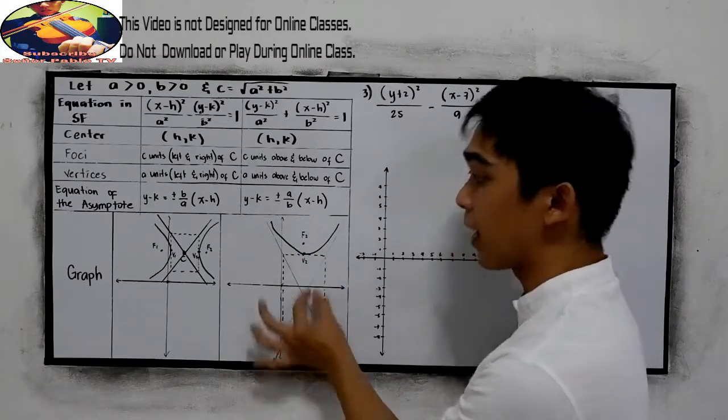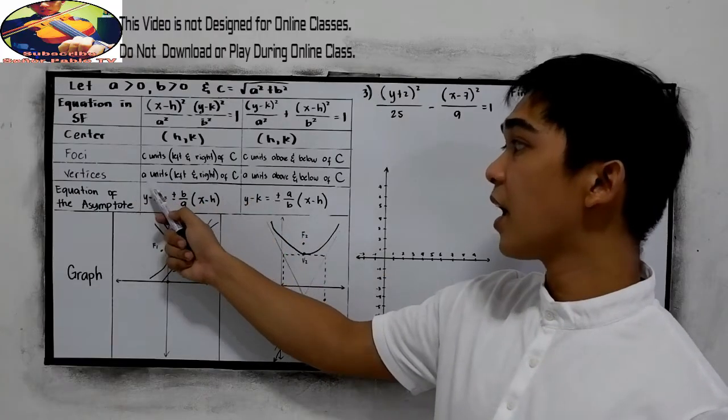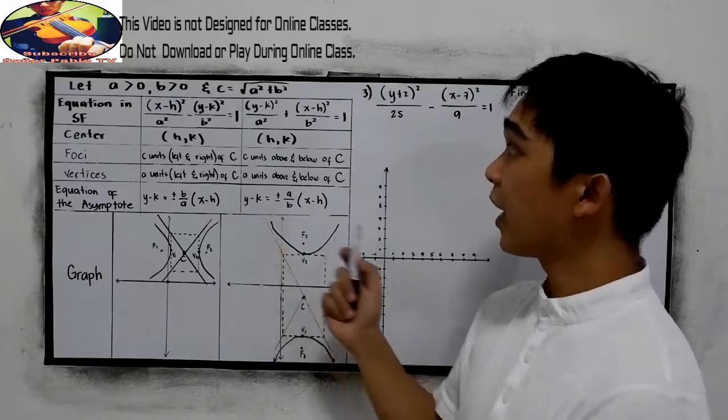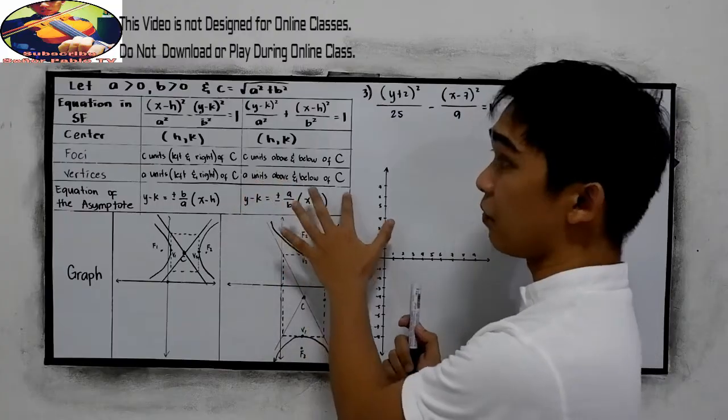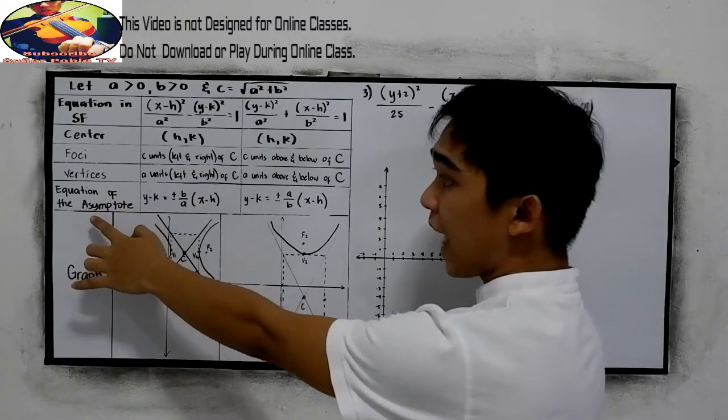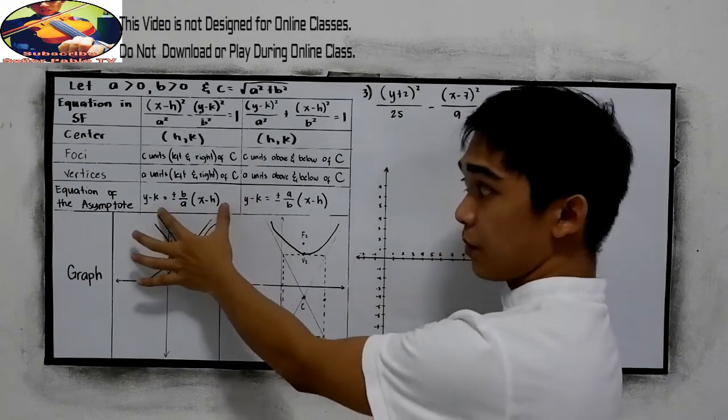So look at our rectangle. And for the vertices, a units, the left and the right of c, and in this case, a units above and below of c. Equation of the asymptote. So we have the asymptote here. So this will be the equation.